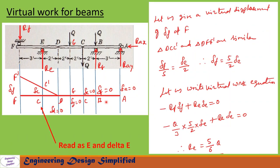To find the reaction at E, RE, let us give a virtual displacement of delta F at F. The beam will assume the position A, B, C, G, D, C prime, and F prime. Here we have two similar triangles: D, C, C prime and D, F, F prime. The distance from F to D is 3 + 2 = 5 feet, with displacement delta F; the distance from C to D is 2 feet, with displacement delta E. From these similar triangles: delta F / 5 = delta E / 2, so delta F = (5/2) delta E.